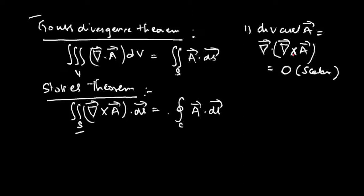You also get zero using the scalar triple product concept, where the determinant has rows (∂/∂x, ∂/∂y, ∂/∂z) and (∂/∂x, ∂/∂y, ∂/∂z) repeated, plus (Ax, Ay, Az). If two rows in a determinant are the same or one is a scalar multiple of the other, the value of the determinant is zero.